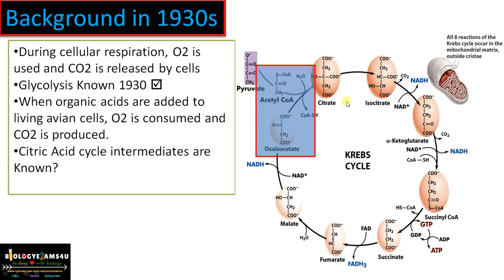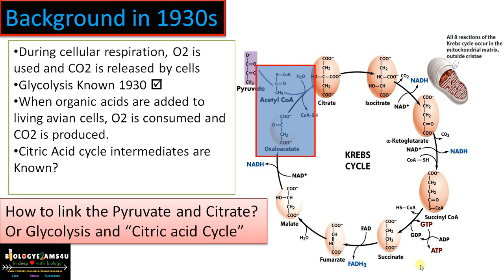How pyruvate is connected to citrate was unclear. Intermediates such as isocitrate, alpha-ketoglutarate, succinyl-CoA, and succinate were known — there were many publications citing these intermediates in cellular respiration — but they were often considered as a linear pathway, and the order of the reactions was not clear. So the primary question for Hans Krebs was how to link pyruvate to citrate, that is, how to connect glycolysis to the next step.